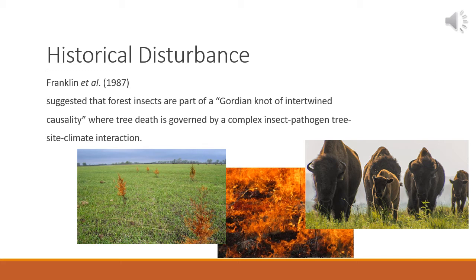Since European settlement of the prairie, the natural and historical disturbance regime has changed significantly, essentially removing fire and grazing from the equation. Drought, on the other hand, continues to be a major variable, frequently introducing difficult growing conditions for planted and naturally regenerating trees.